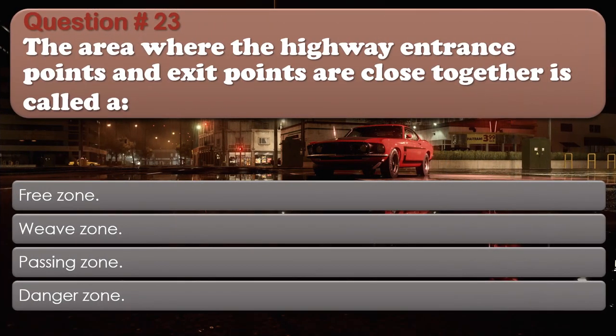Question number 23. The area where the highway entrance points and exit points are close together is called a: Free zone. Weave zone. Passing zone. Danger zone. The correct answer is: Weave zone.